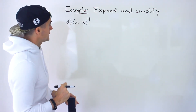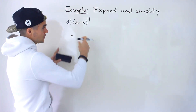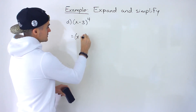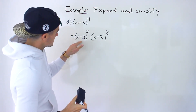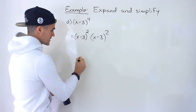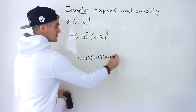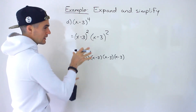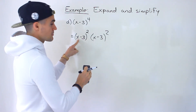Finally, part d: x minus 3 to the power of 4. What I'm going to do — instead of writing out four brackets — is rewrite this as (x minus 3) squared times (x minus 3) squared. If we can expand each squared expression, we'll just have two bigger brackets multiplying. This is quicker because both expressions are the same.